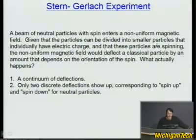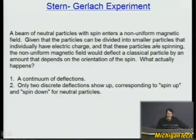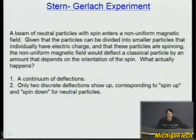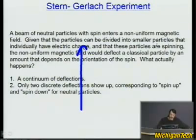Now let's go to the Stern-Gerlach experiment, which is really interesting. Here we have a beam of neutral particles that spin enters a non-uniform magnetic field — the effect would go away if it were completely uniform. You need a top and bottom defined by the magnetic field. Given that the particles can be divided into smaller particles that individually have electric charge and are spinning, the non-uniform magnetic field would deflect a classical particle by an amount that depends on the orientation of the spin.